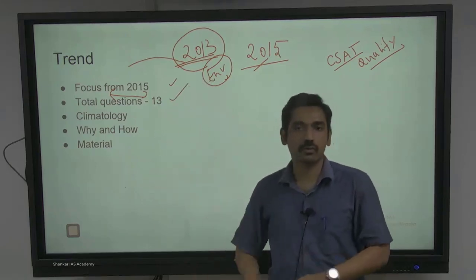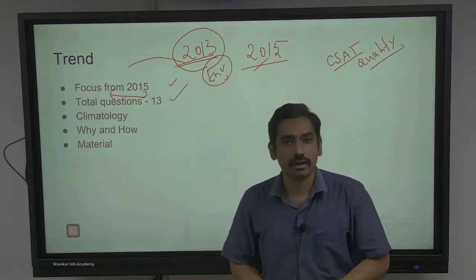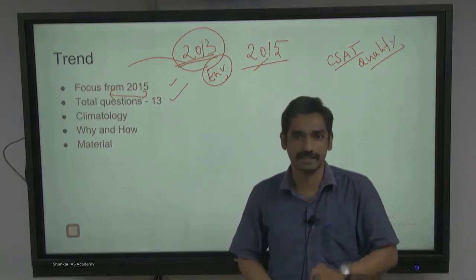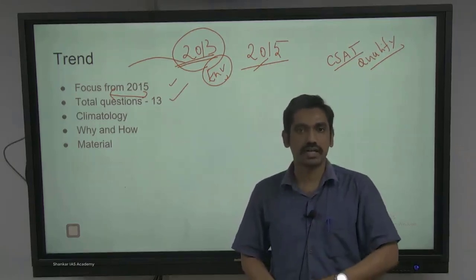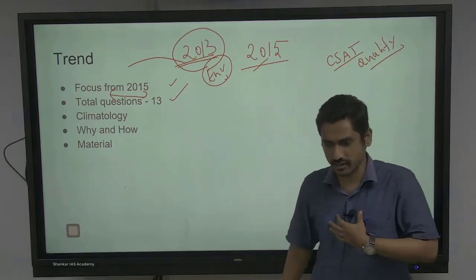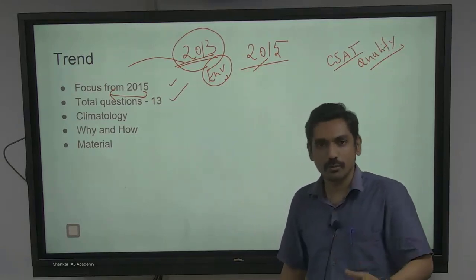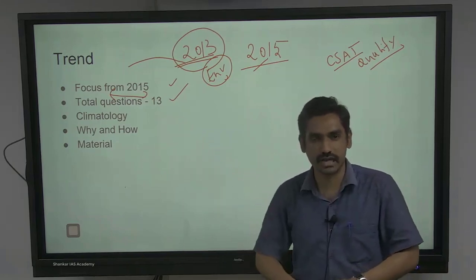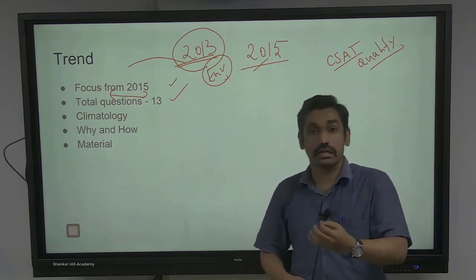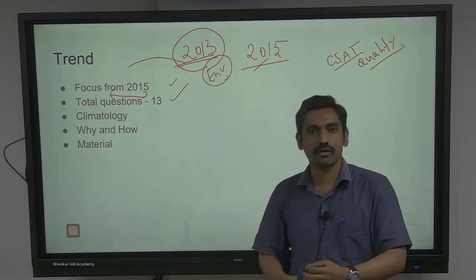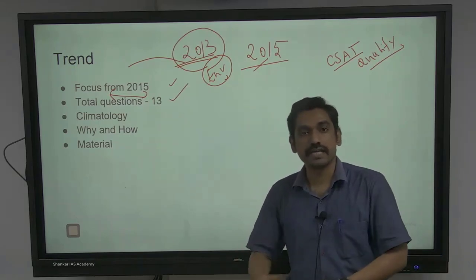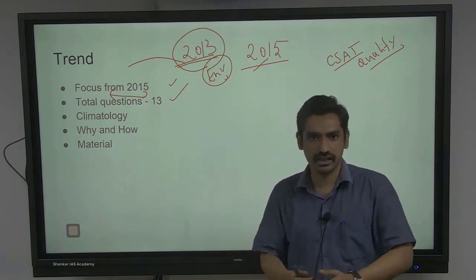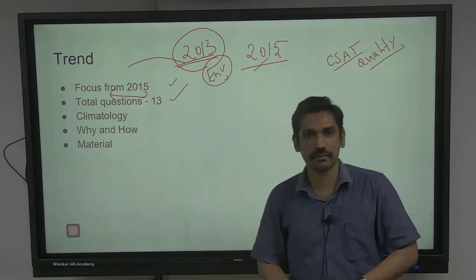Talking about the total number of questions — not total from geography, but total from physical geography in the last six years including the 2020 prelims — it is 13. Thirteen doesn't sound very attractive, but it boils down to one or two questions getting it right. What you learn as a foundation for physical geography is very essential for both agriculture and environment, whose importance has definitely increased since 2013.